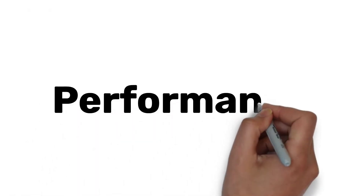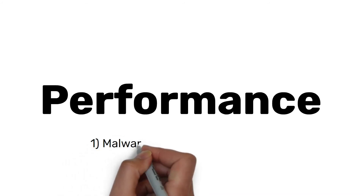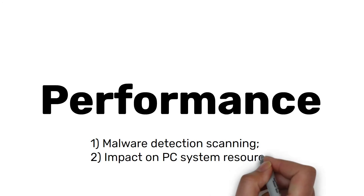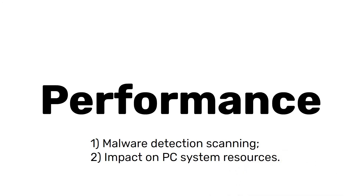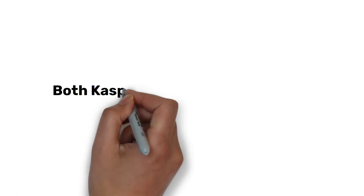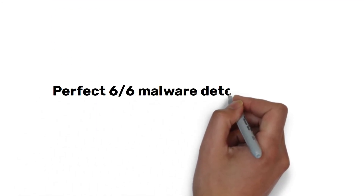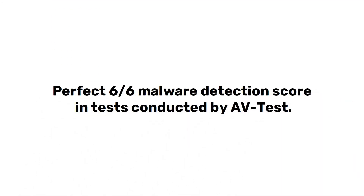Now let's talk about performance. There are two main criteria by which we can judge an antivirus program in terms of its performance. One is how well each program detects and scans for malware, and the other is how much impact the program has on your PC's performance. Some antivirus programs, typically ones which come pre-installed for free, can be extremely heavy, which in turn makes your computer slower — and that's the opposite of what we want. We want something that's lean and light, but still helps protect our files. Thankfully, both Kaspersky and Trend Micro score fantastically in both criteria. In terms of malware detection, both programs scored a perfect 6 out of 6 in tests conducted by AV-Test, which is an independent testing organisation — so they didn't pay for that test to be conducted; it was what that lab found that they scored.